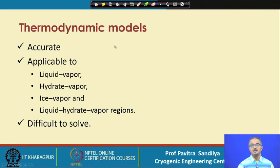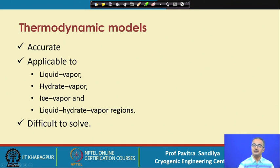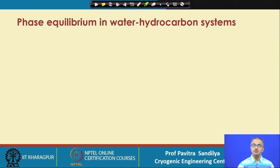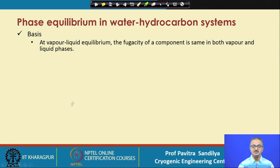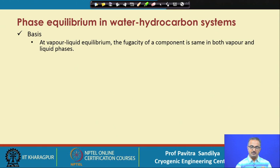Thermodynamic models are quite accurate and applicable to all kinds of phase combinations: liquid-vapor, hydrate-vapor, ice-vapor, and liquid-hydrate-vapor regions. There is a possibility of ice formation in natural gas depending on the temperature and pressure due to the water content. However, these thermodynamic models are difficult to solve. The basis of one such model is that at vapor-liquid equilibrium, the fugacity of a component is the same in both the vapor and liquid phases.